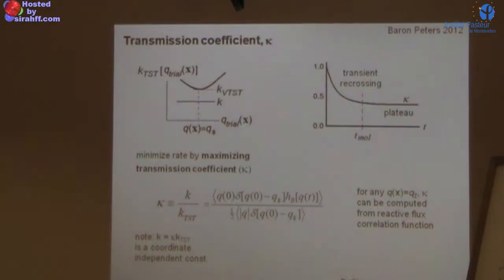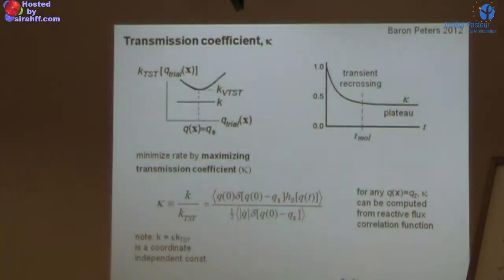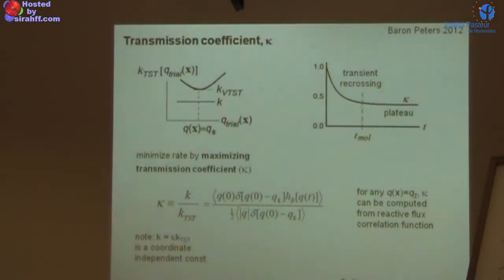The transmission coefficient is computed from time correlation functions. You have an initial flux crossing the dividing surface at time zero toward the product state, and at later time t you ask: is that flux still on the product side? In short times, some fraction crosses back due to transient recrossing. Normalizing by what should happen if TST were correct gives an autocorrelation-like function that drops from one and reaches a plateau value — that plateau is κ. The transient recrossings occur on the timescale of barrier relaxation. The plateau value gives the correction needed for the dynamically correct rate constant. This approach goes back to Chandler in 1978.